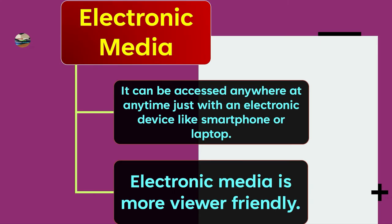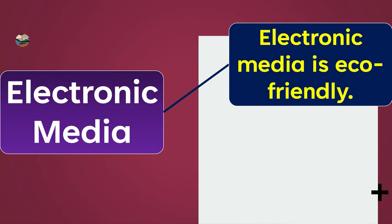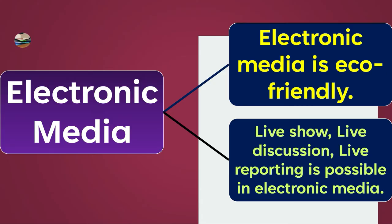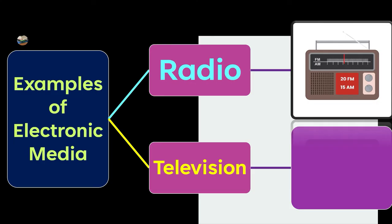Electronic media is more viewer-friendly and eco-friendly. Live shows, live discussions, and live reporting are all possible in electronic media. Examples include radio — the most popular one historically — and television, which we watch regularly.